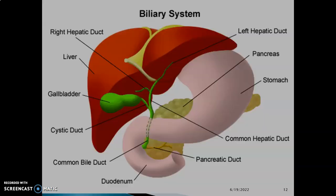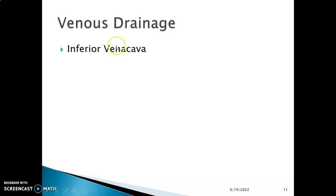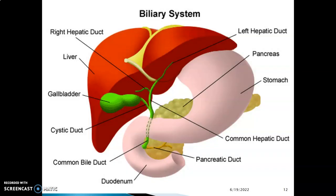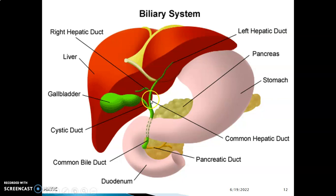The liver is drained by the inferior vena cava through the middle, right, and left hepatic veins that open into it. This image shows the liver as a gland, the cystic duct, and the left and right hepatic ducts forming the common hepatic duct, which is joined by the cystic duct. The common bile duct together with the pancreatic duct opens at the ampulla of Vater, the second part of the duodenum — that is how bile flows.